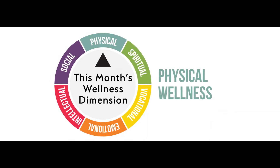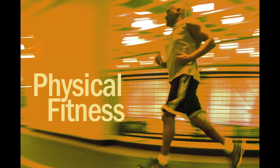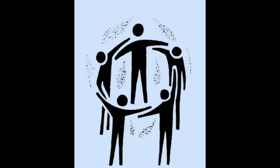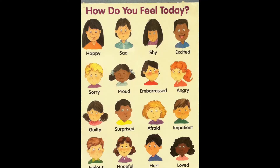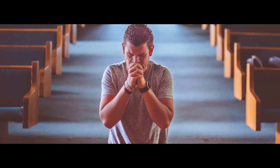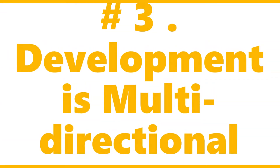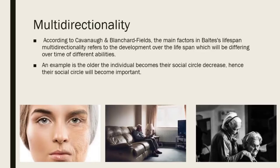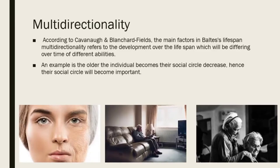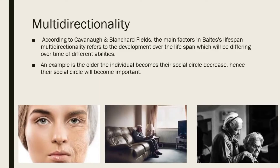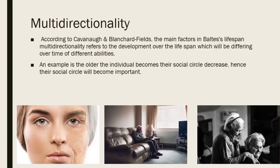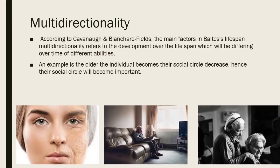Multi-dimensional development basically means things dealing with the physical body, intelligence, interaction, emotions, and spirituality. Development is also multi-directional: some components or dimensions increase in growth, while others decrease, depending on the age and social context of the individual.